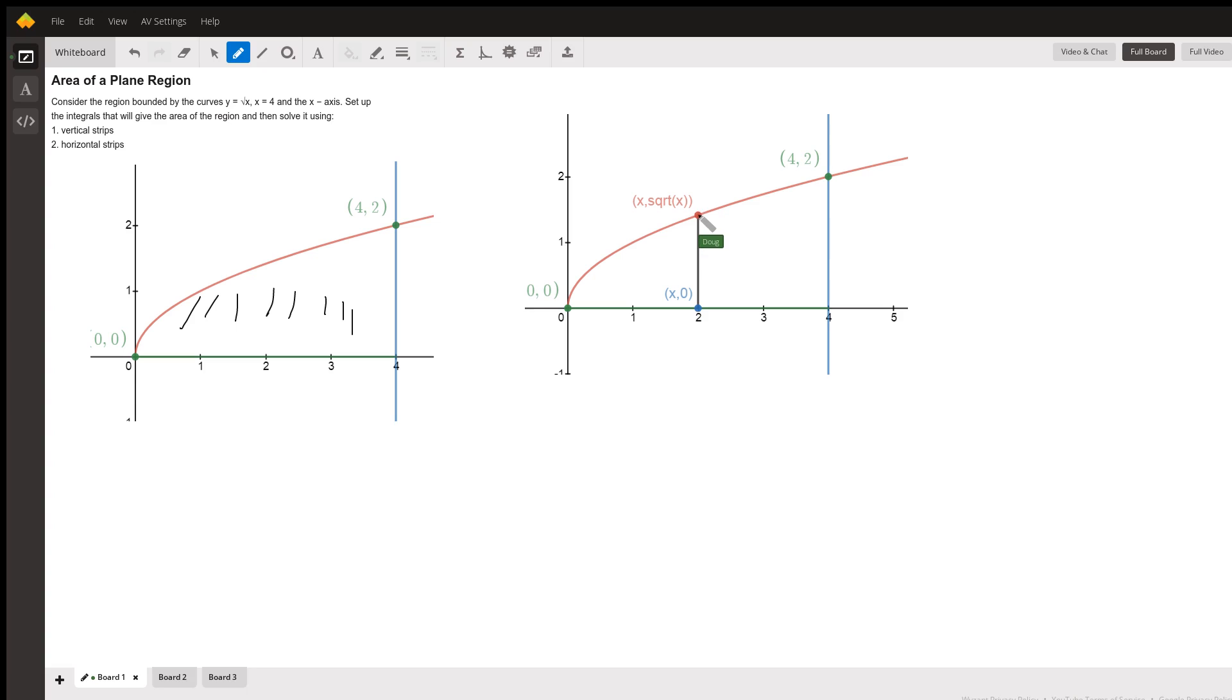Over here to the right I've added a typical vertical strip. What you notice is that for every x in the interval from 0 to 4, the height is this value right here, square root of x, take away the y-coordinate along the x-axis which is 0. So every one of these vertical strips has the same pattern.